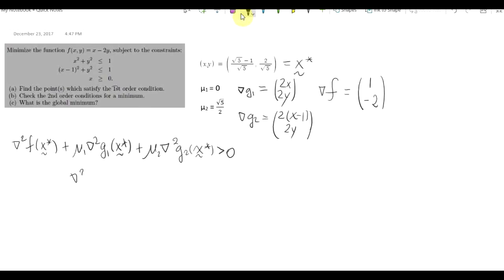So recall the candidate for a minimizer that we found in the previous video. Now I'm going to show that this candidate satisfies the sufficient second-order conditions for a local minimum.